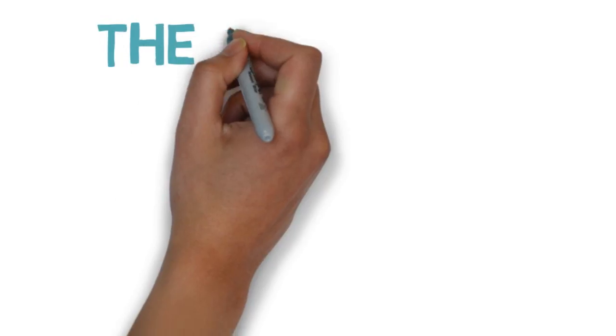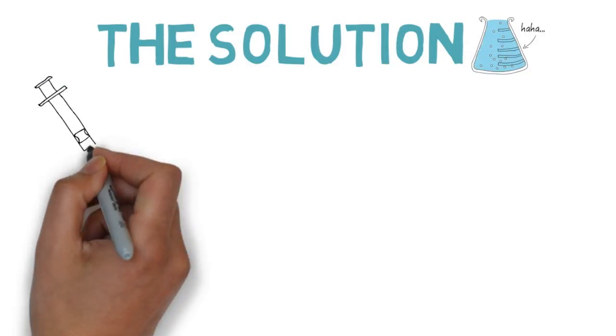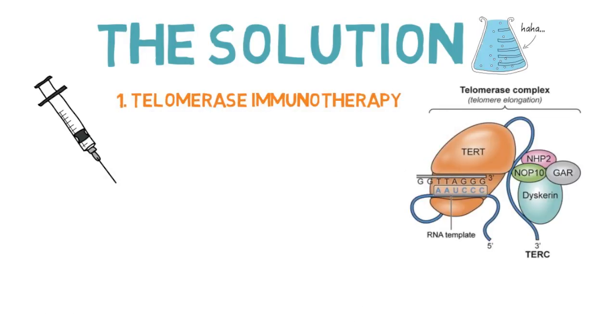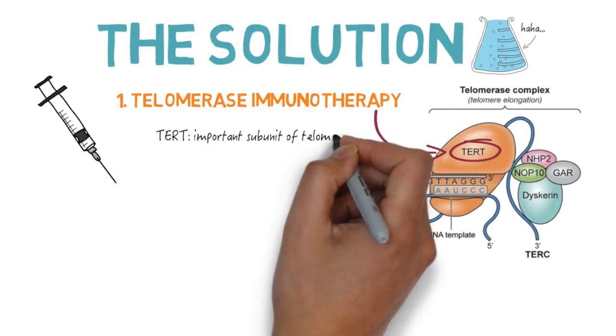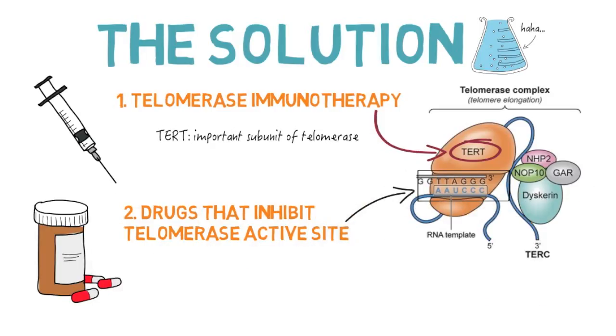Is there a solution? Many researchers have analyzed ways to stop telomerase activity in cancer cells. The first is telomerase immunotherapy, where immune cells are programmed to destroy cancer cells marked with TERT, a subunit in telomerase. There are also drugs that block the active site, which is where telomerase attaches to DNA.